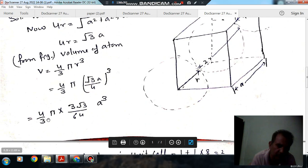The volume becomes four by three pi into three root three by 64 A cube.